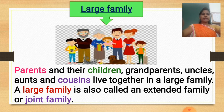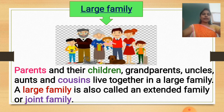The second type of family is a large family. Parents, children, grandparents, uncles, aunts, and cousins live together in a large family. A large family is also called an extended family or joint family.